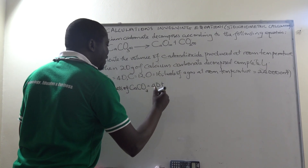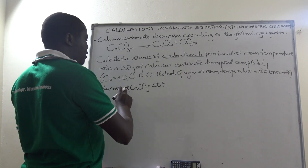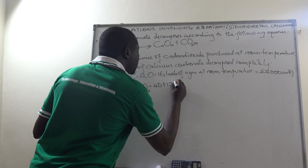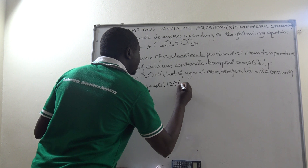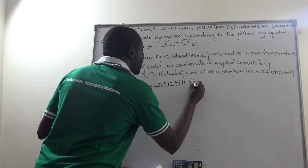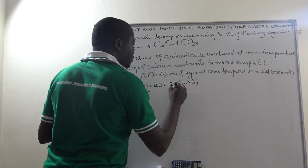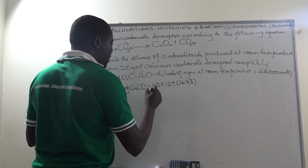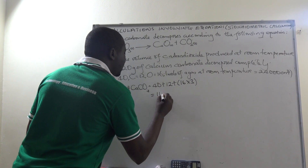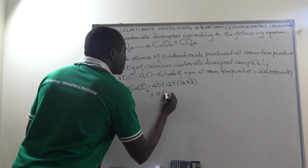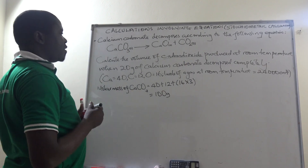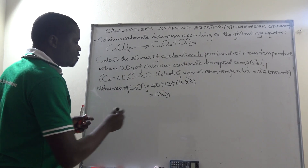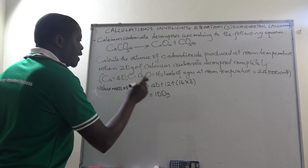We apply the relative formula mass: adding the relative atomic masses gives us 40 plus 12 plus 16 times 3. That is 40 plus 12 plus 48, which equals 100. So the molar mass of calcium carbonate is 100 grams per mole.